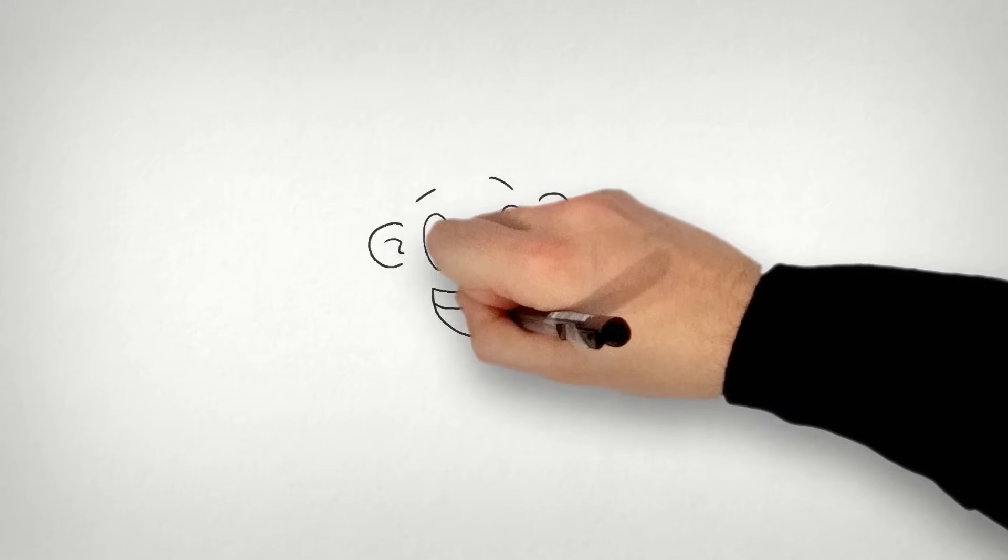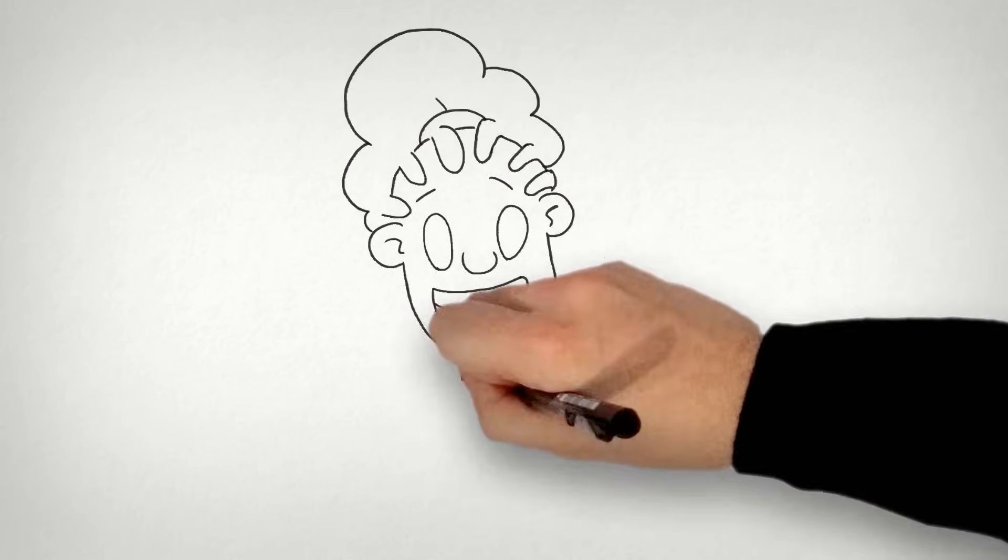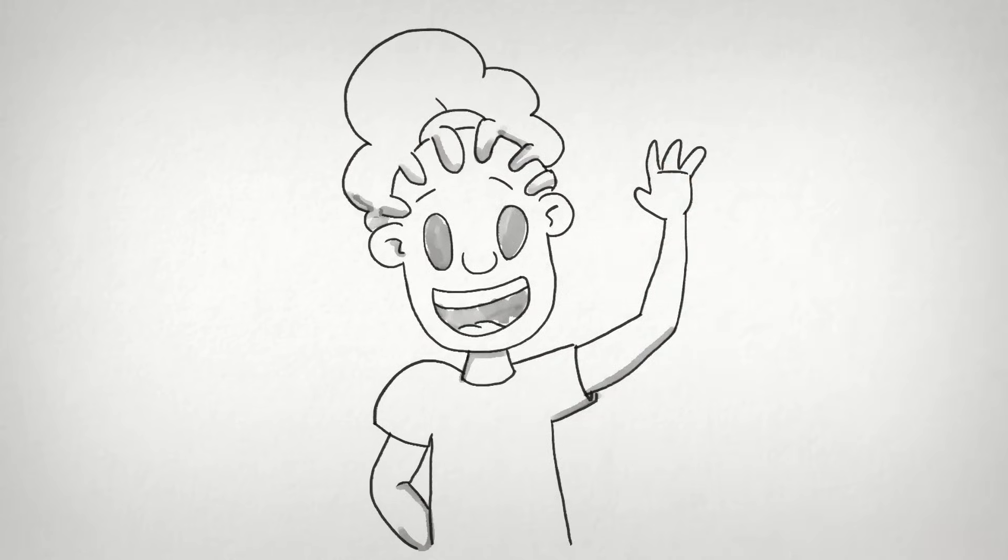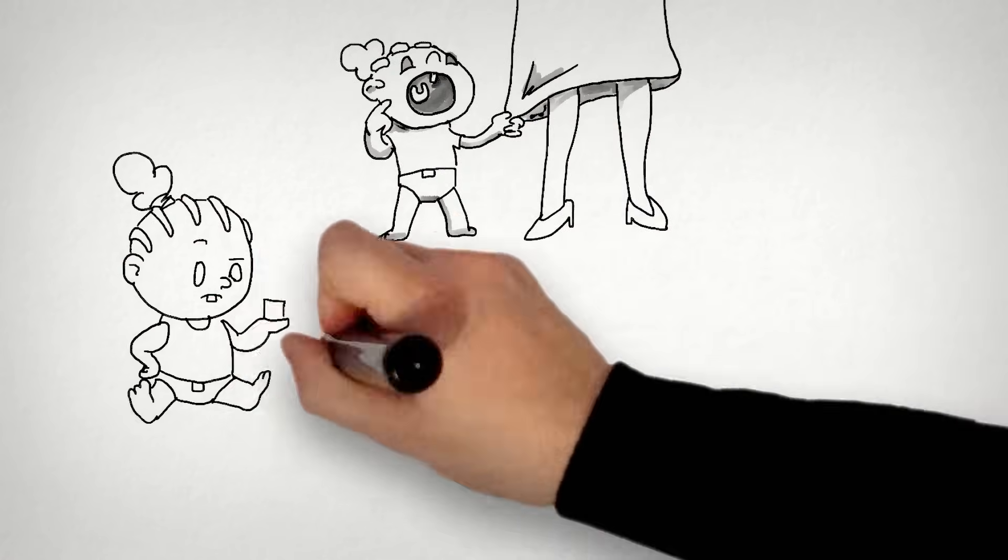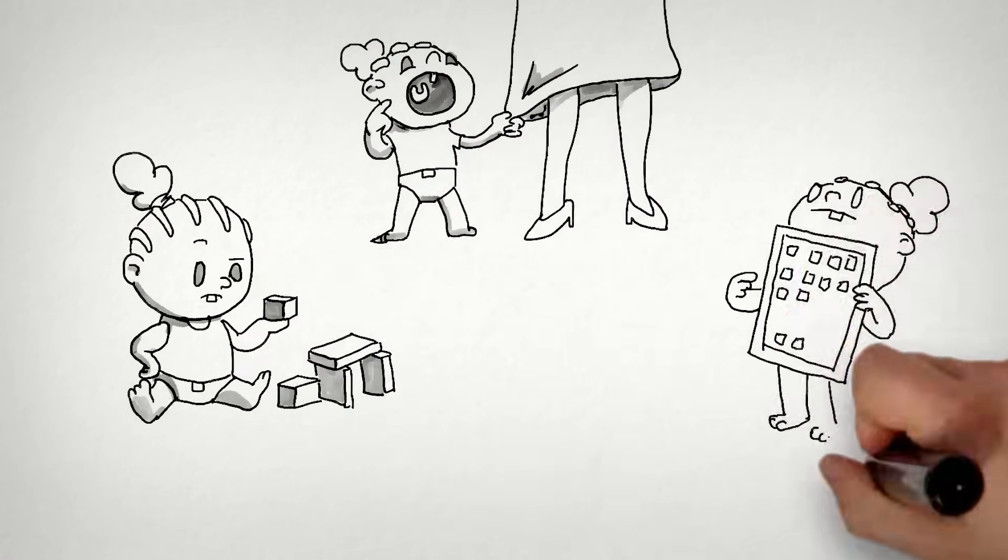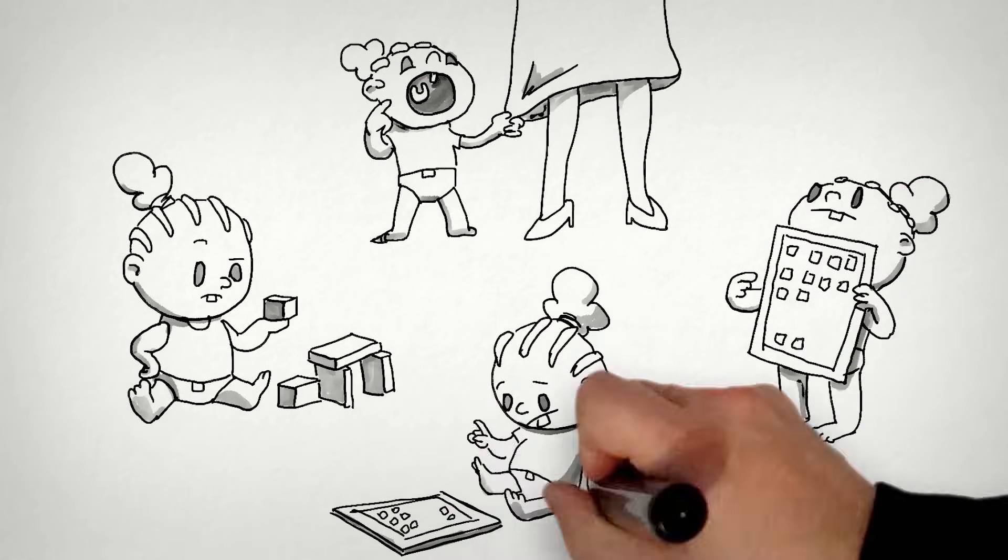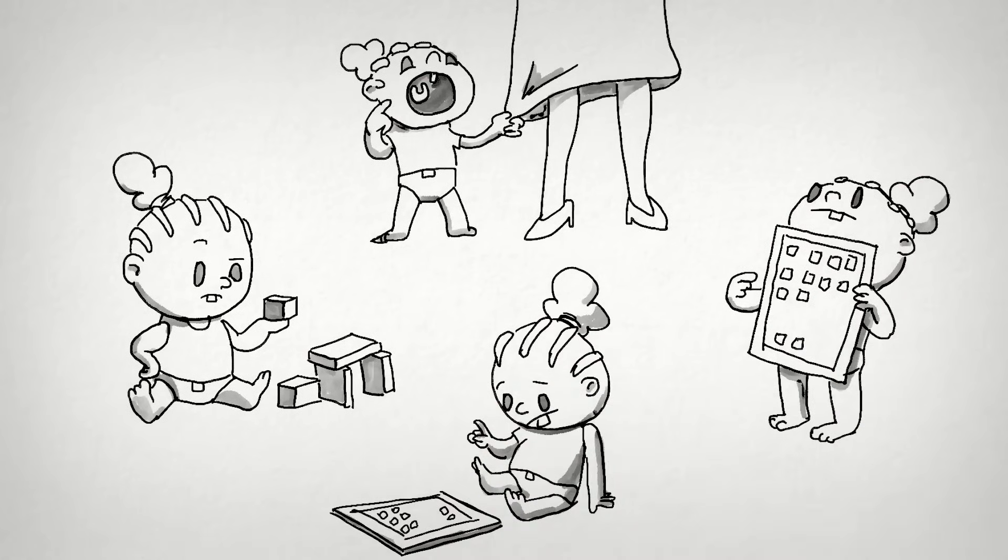So with this in mind let's think about a student in a South Australian school. Let's call her Samira. Samira has been learning to solve problems from birth. How can I let them know that I am hungry? How does this block fit? How does this game work? How do I do that?